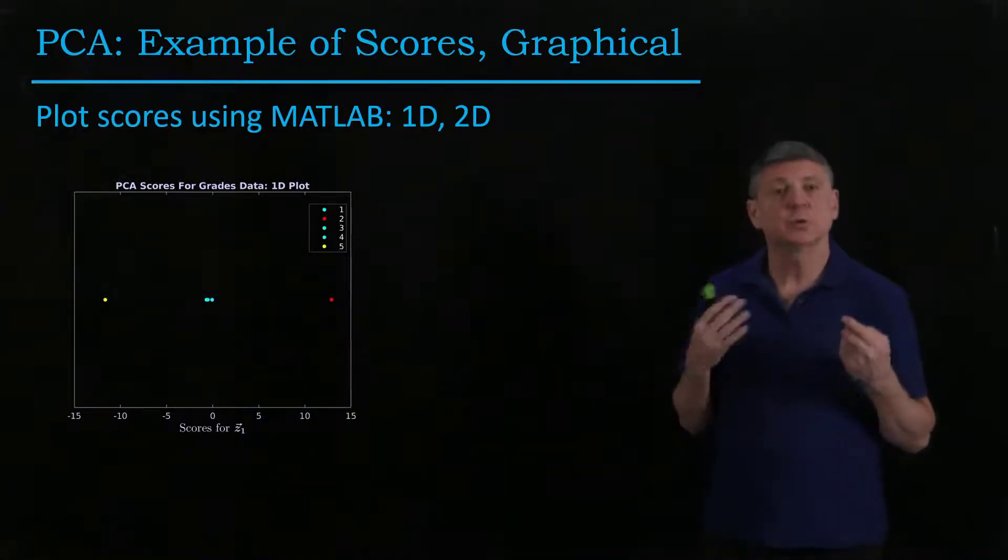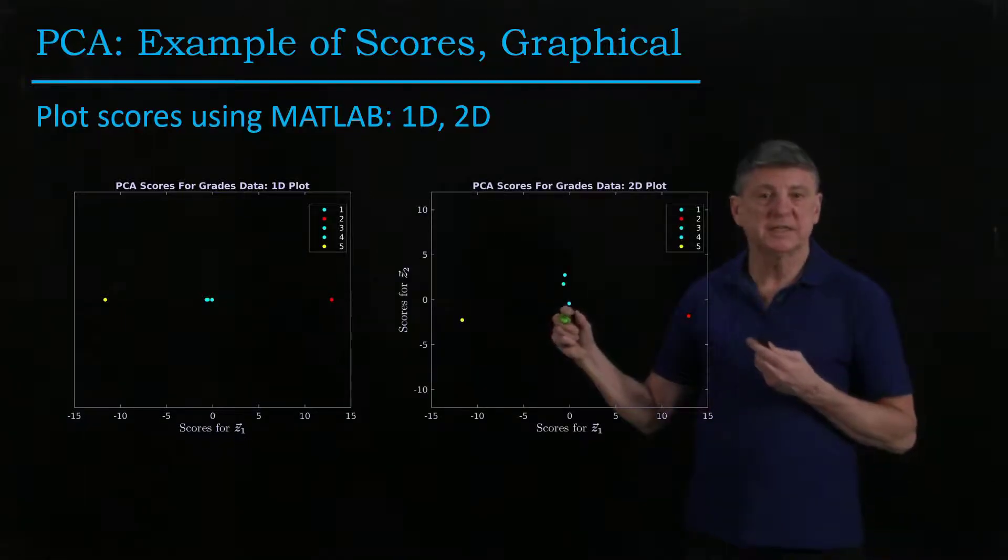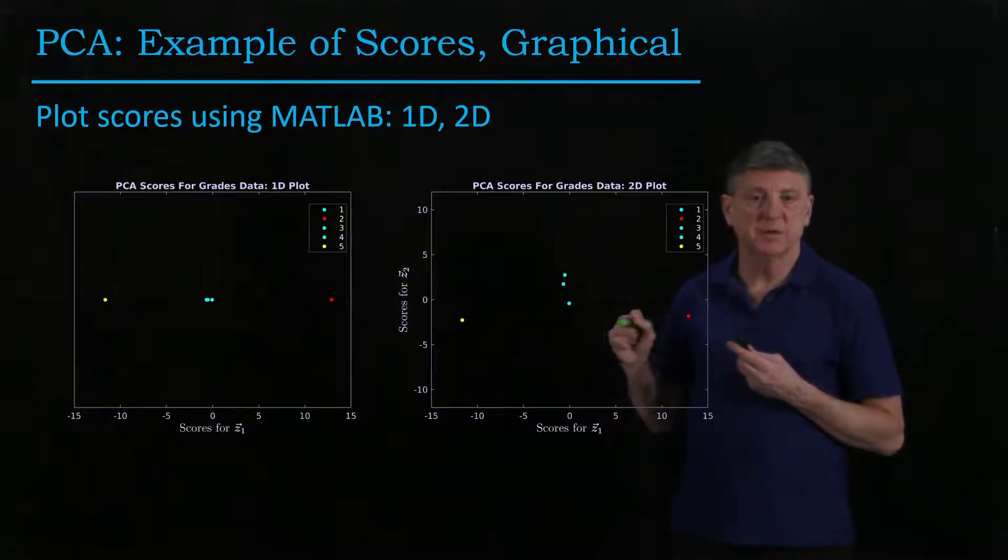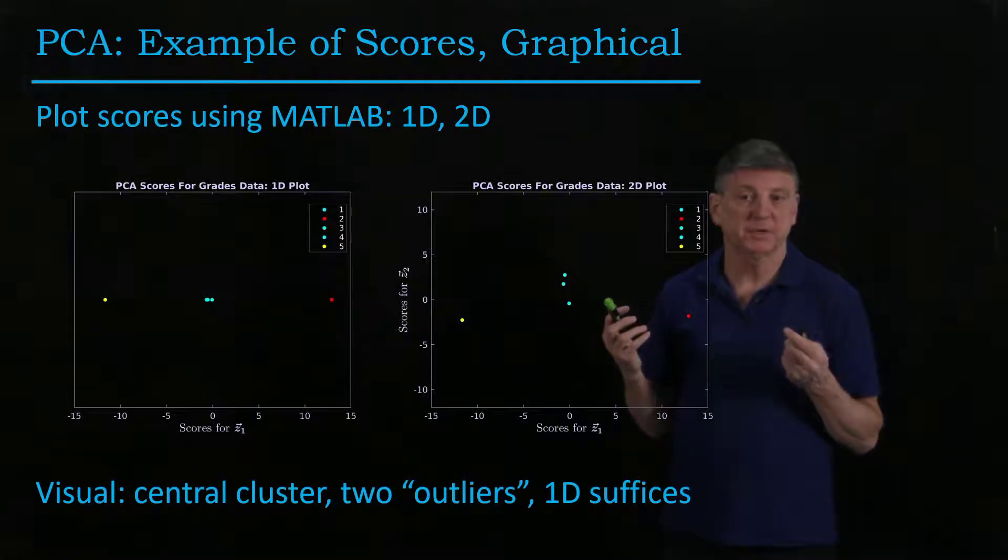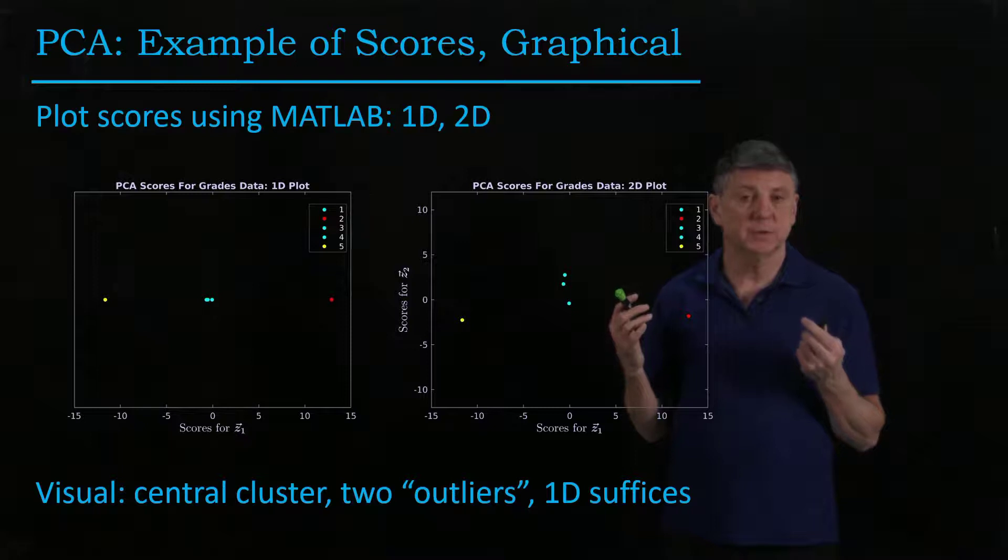When we add the second score, we add a second dimension to our plot. These first ones are being spread out a little bit, and these others have been pushed to be slightly negative, but this has not substantially changed our picture. What we see visually is a central cluster and two outliers.